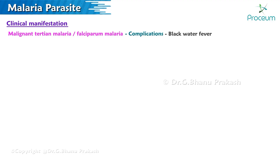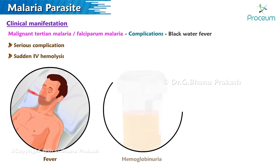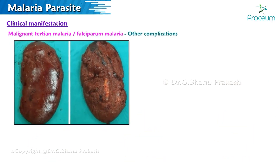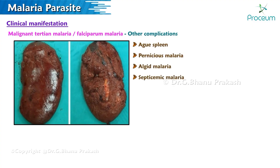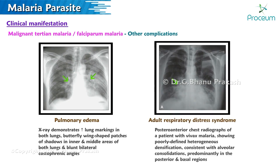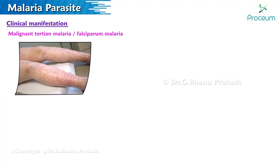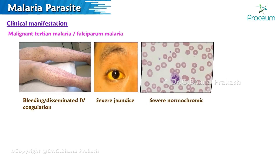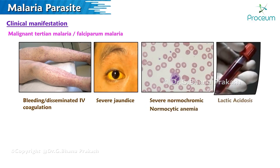Blackwater fever is a serious complication of falciparum malaria, characterized by sudden intravascular hemolysis followed by fever, hemoglobinuria, and dark urine. Other complications include pernicious malaria, algid malaria, and septicemic malaria. Falciparum malaria can also lead to pulmonary edema, adult respiratory distress syndrome, bleeding, disseminated intravascular coagulation, severe jaundice, severe normochromic normocytic anemia, and lactic acidosis.